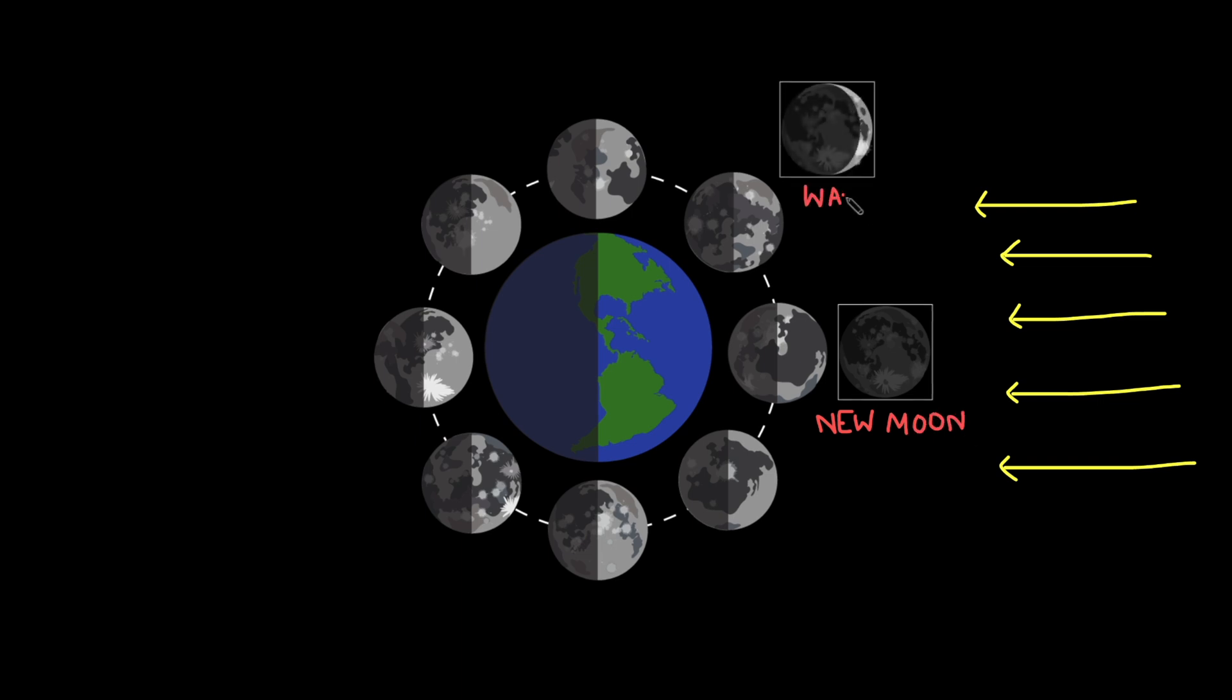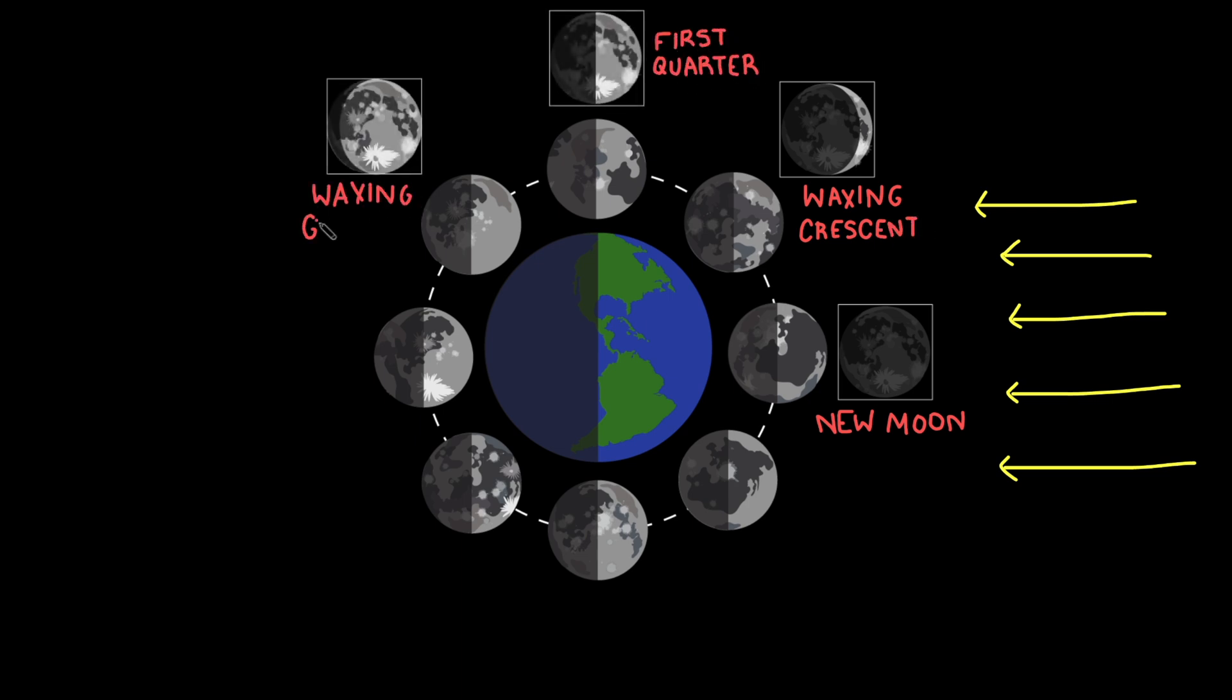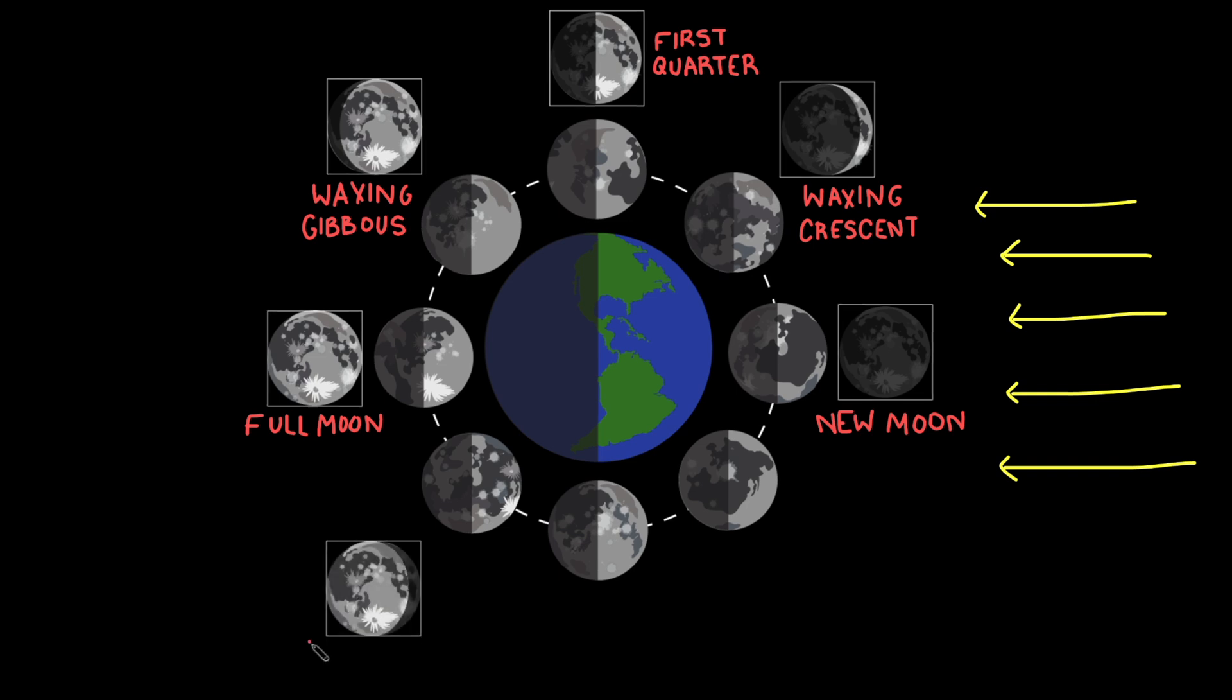As the moon begins to move around earth, we start to see a sliver of light. The amount of sunlight we see on the moon grows more and more until the moon and sun are on opposite sides of earth. At this point, we see a full moon. As the moon goes on, we begin to see less and less of the sunlight.